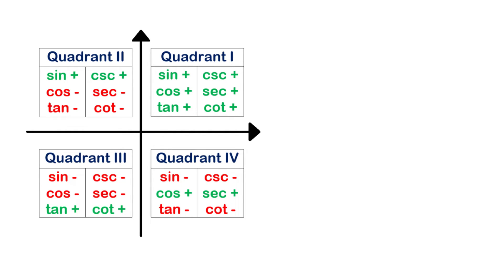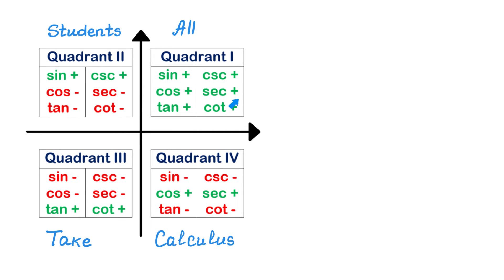There are a few ways to memorize these signs. One way is to use the sentence 'All Students Take Calculus.' Write 'All' in quadrant 1, 'Students' in quadrant 2, 'Take' in quadrant 3, and 'Calculus' in quadrant 4. 'All' stands for all the functions in quadrant 1; S is for sine and its reciprocal in quadrant 2; T is for tangent and its reciprocal in quadrant 3; and C is for cosine and its reciprocal in quadrant 4.